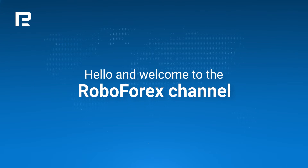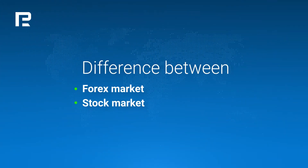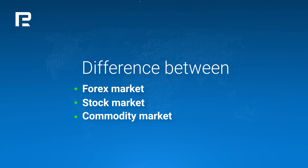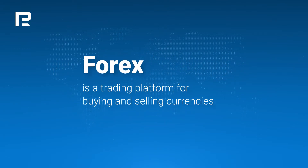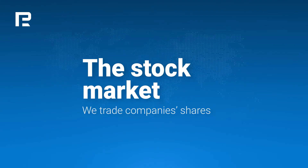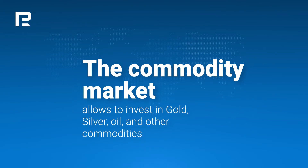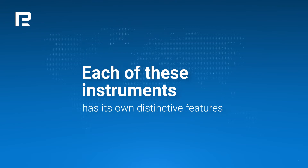Hello and welcome to the RoboForex channel. Today we'll compare three different markets: the forex market, the stock market, and the commodity market, and specify their key differences and advantages. The key difference between these markets is the assets that we trade. Forex is a platform for buying and selling currencies. The stock market is a place where we trade stocks and shares, while the commodity market allows us to invest in gold, silver, oil, and other commodities.